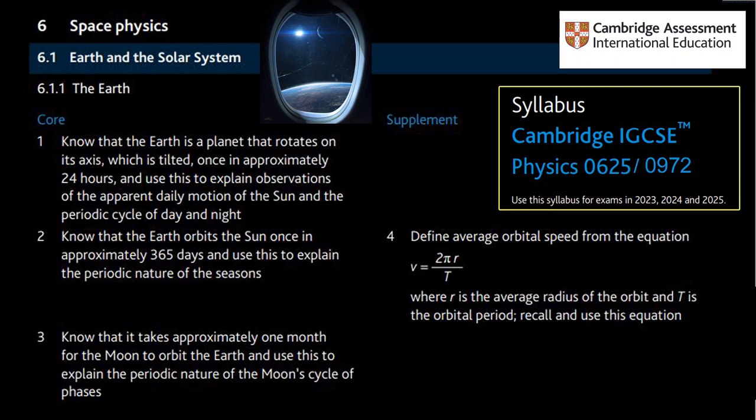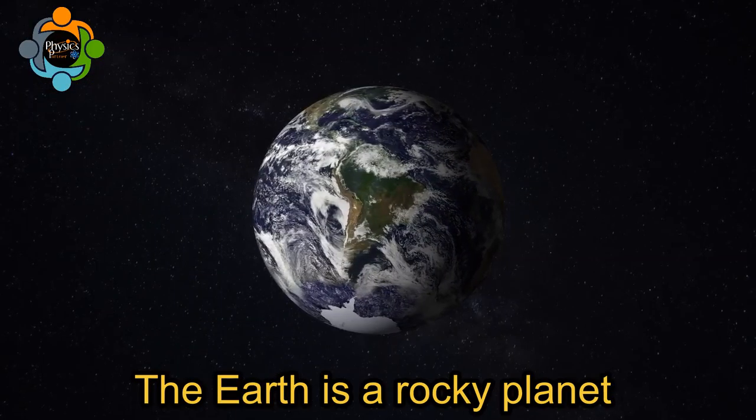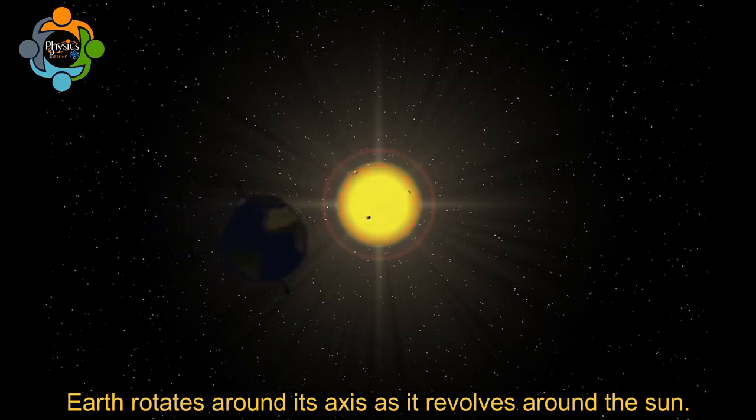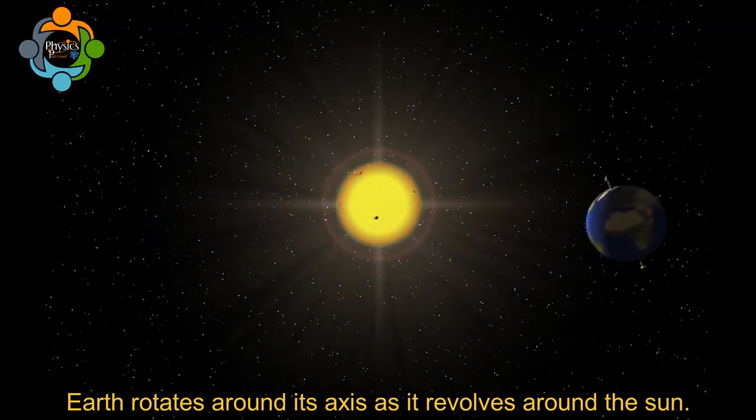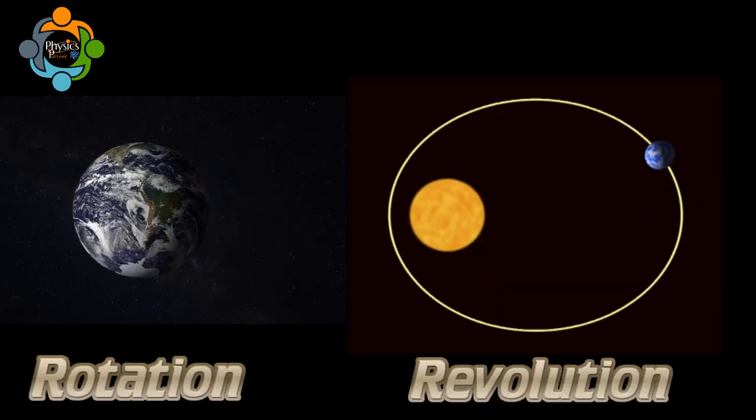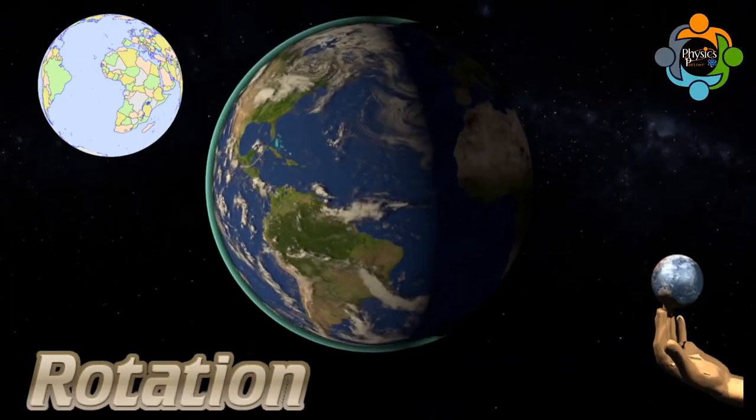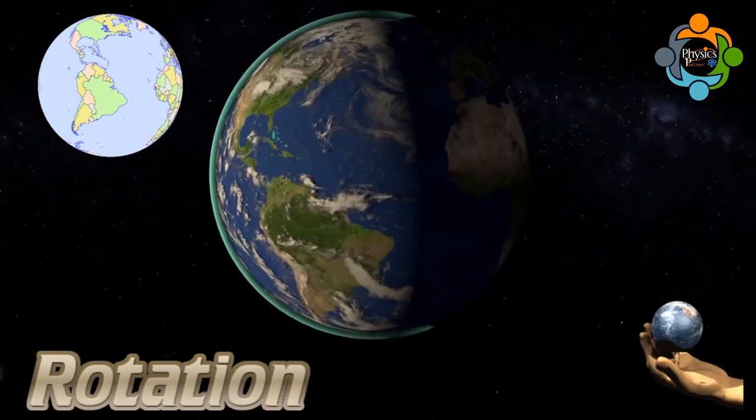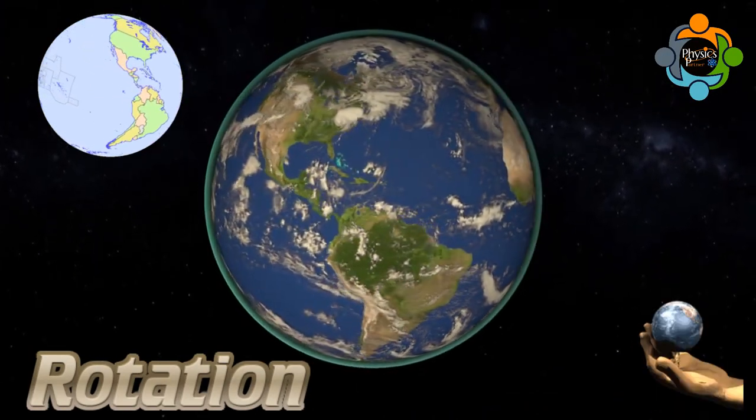The Earth is a rocky planet that rotates in a near circular orbit around the sun. Let's understand the two terms: rotation and revolution. Rotation refers to an object's spinning motion about its own axis, whereas revolution refers to the object's orbital motion around another object.